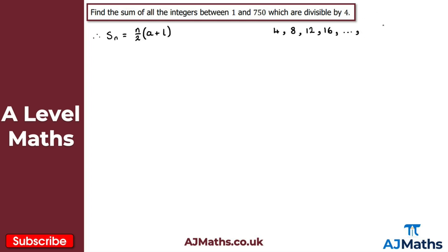We need the last term. Working backwards from 750: 750 isn't divisible by 4, 749 isn't, but 748 is — so the last term l is 748. We also need n, the number of terms. So a equals 4, l equals 748, and n equals 748 divided by 4, which is 187.